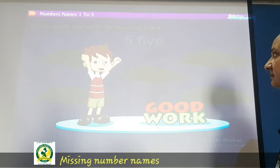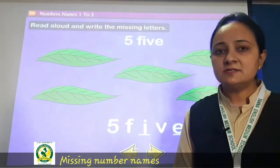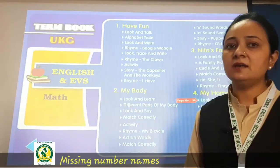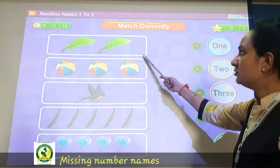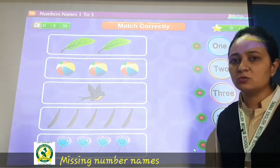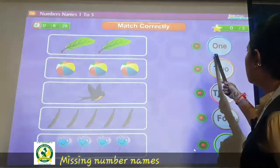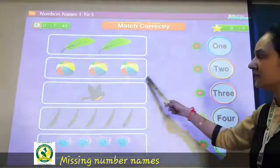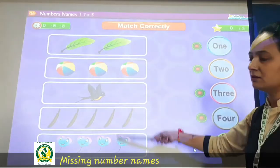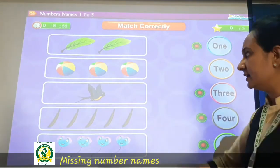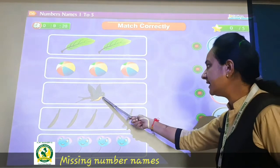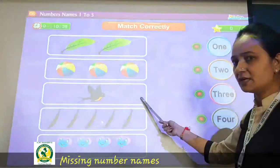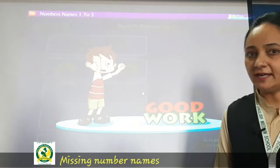Now see the next page, page number 125. See here — you have to match over here. 1, O, N, E — ONE. What can you see over here? This bird, right? So ONE comes here — match.